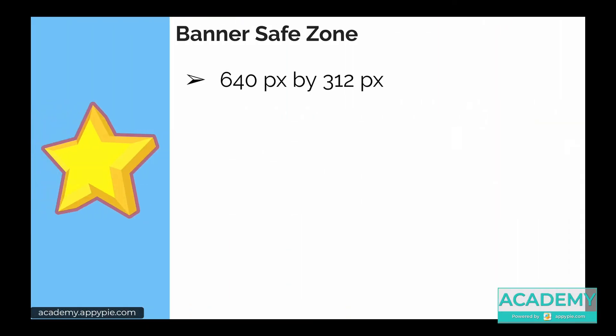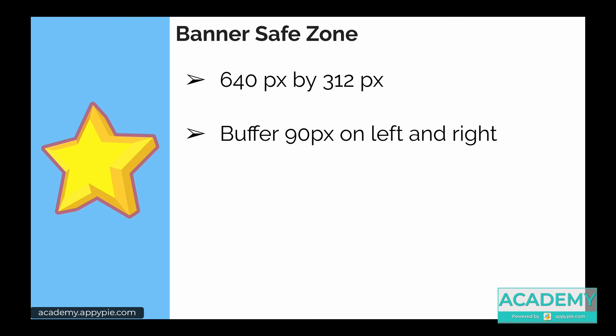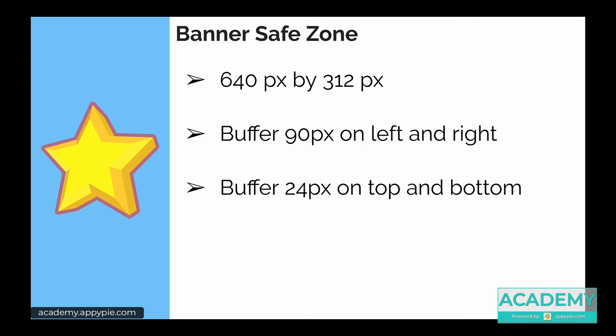The safe zone is typically 640 pixels by 312 pixels. Whatever is inside that area won't get cut off. The typical cutoff is approximately 90 pixels on the left and right on mobile, and approximately 24 pixels on the top and bottom.